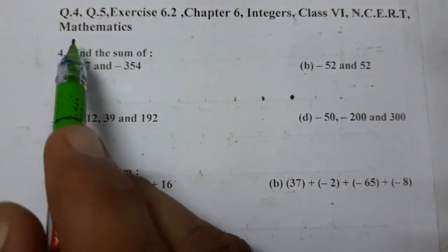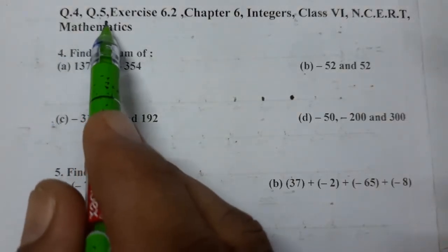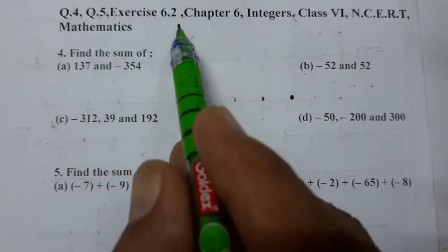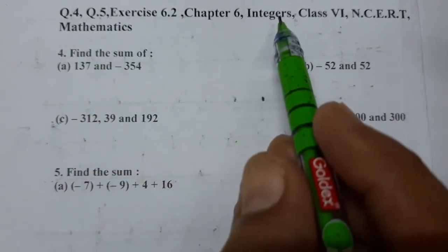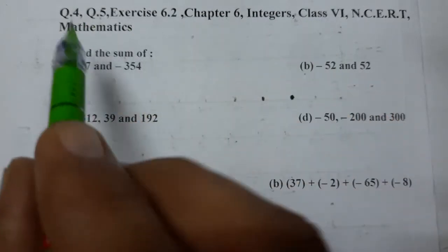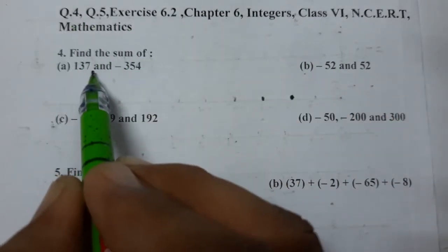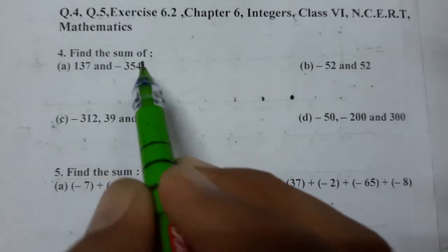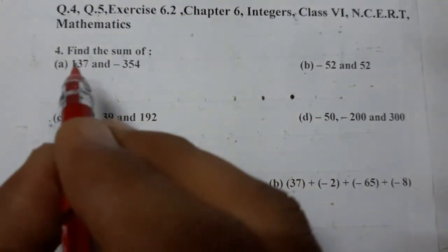Hello students, today we are going to do question number 4 and question number 5 of Exercise 6.2, Chapter 6, Class 6 Mathematics. Find the sum of 137 and minus 354.